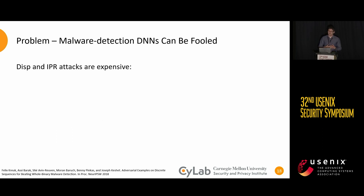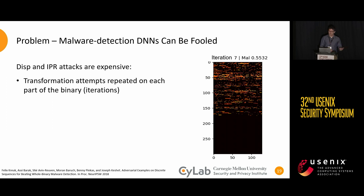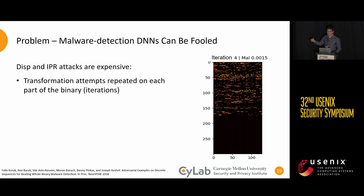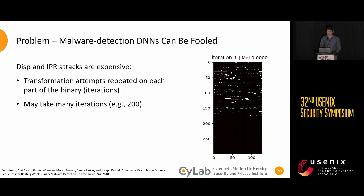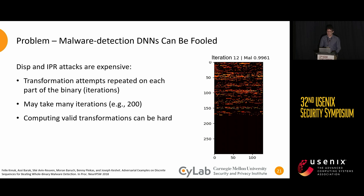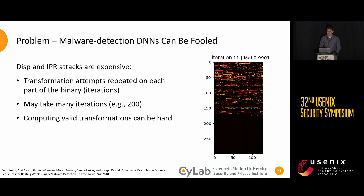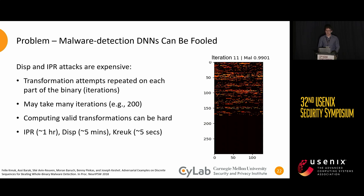Another important aspect is the cost of these attacks. Displacement and IPR attacks are expensive because transformations need to be calculated individually for every part of the binary. It can take many iterations to successfully evade a detector, with the original IPR and displacement attacks allowing up to 200 iterations. Overall, an IPR attack takes about an hour to create, a disp attack takes around five minutes, and a Kroik attack takes around five seconds.